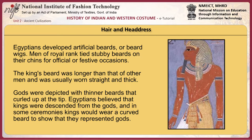Egyptians developed artificial beards or beard wigs. Men of royal rank tied stubby beards on their chins for official or festive occasions. The king's beard was longer than that of other men and was usually worn straight and thick. Gods were depicted with thinner beards that curled up at the tip. Egyptians believed that kings were descended from the gods, and in some ceremonies kings could wear a curved beard to show that they represented gods.